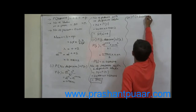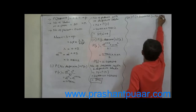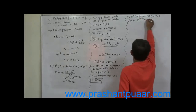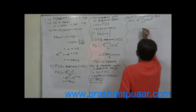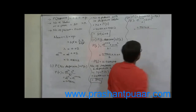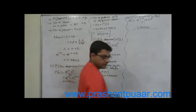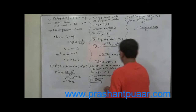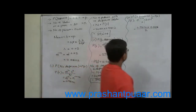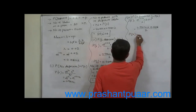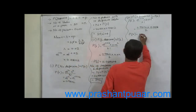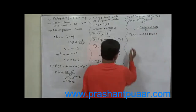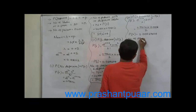Now the third case: probability of two defective blades, P(2), equals e raised to minus mean multiplied by mean raised to 2 divided by 2 factorial. That is 0.9802 × (0.02)^2 / 2. Since (0.02)^2 = 0.0004, dividing by 2 factorial (which is 2) gives 0.9802 × 0.0004 / 2 = 0.00019604.